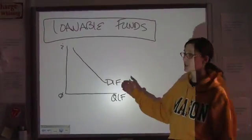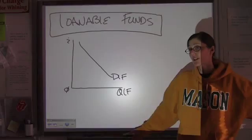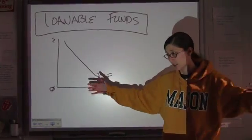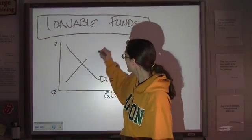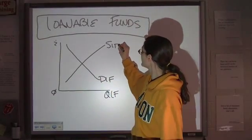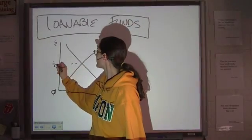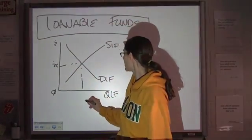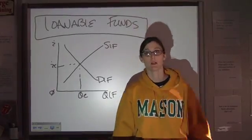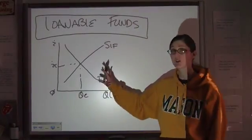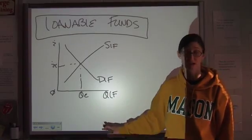Now, demand slopes down, supply slopes upward. It's not a revolutionary concept. So, we're going to put upward sloping supply of loanable funds here. We have our equilibrium interest rate. We have our equilibrium quantity. That's our starting point. Again, it's an easy graph to start with.